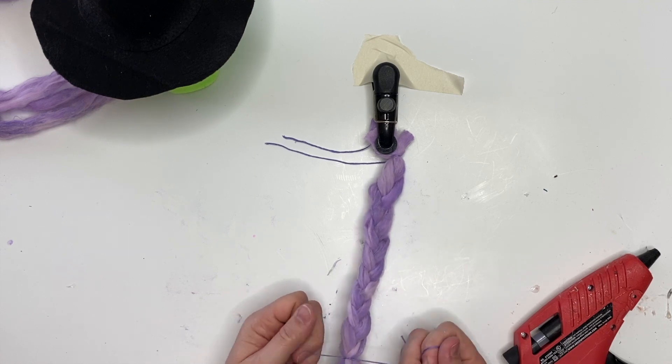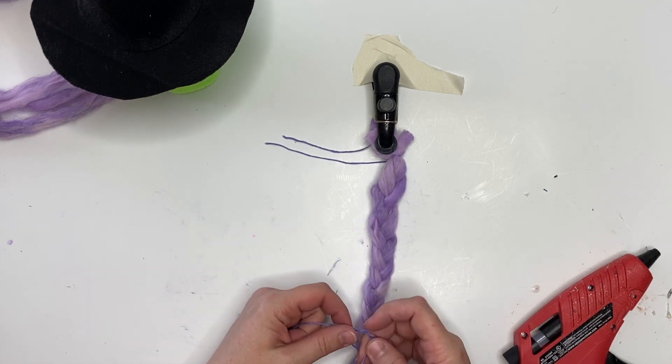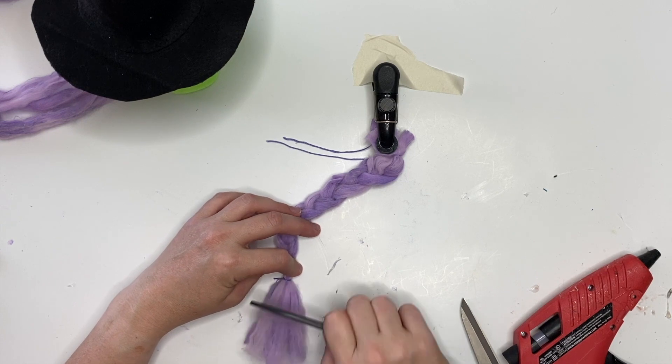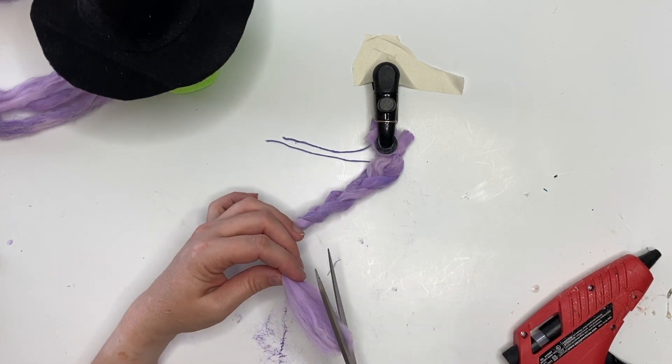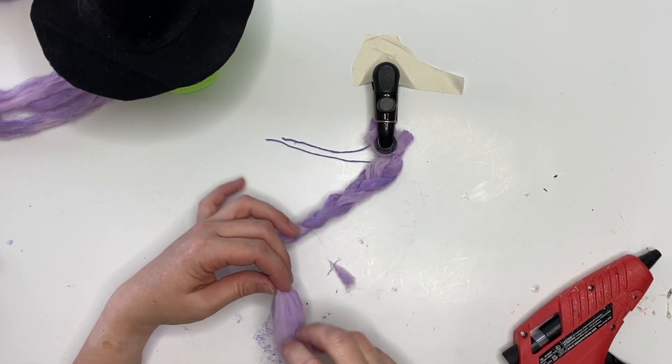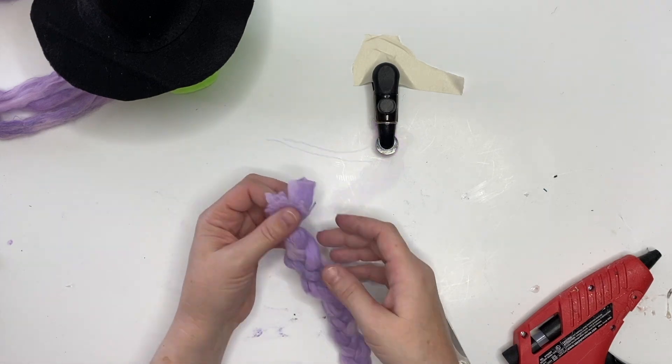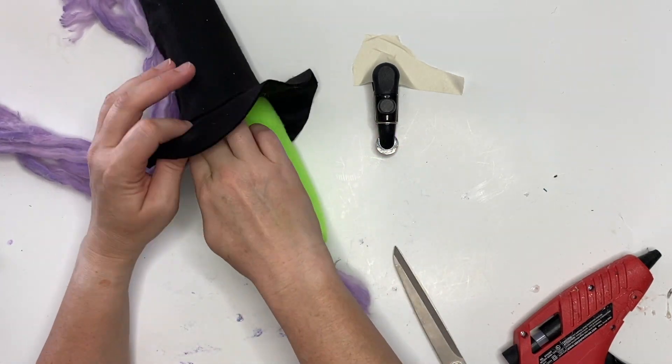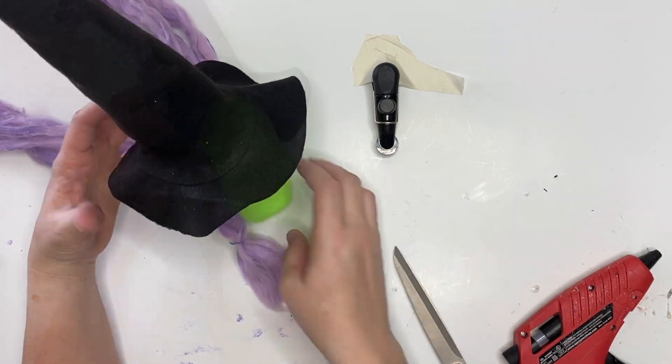You just braid them all down, you're gonna tie it off at the top and the bottom—I'm using embroidery thread. Then I just brushed out the bottom and then I snipped it, and now it looks like the end of a broom. Now I'm just test fitting here.